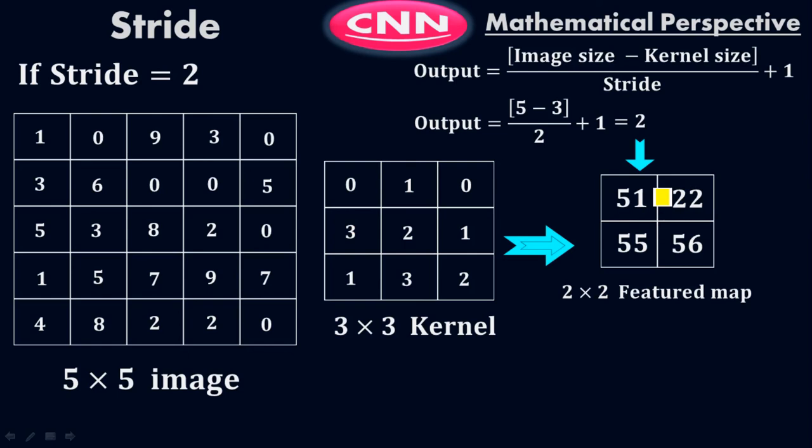This whole process is called the feature extraction process. Moving ahead, we flatten this matrix into a single row. We have a total of four elements, so we put all four elements in a single column — this is called flattening of the feature map. Once you have flattened it, you pass it to the fully connected layer, and the rest of the process is exactly the same as what we did before.